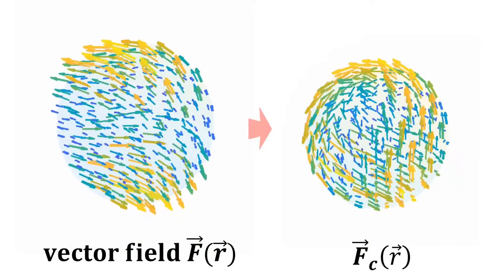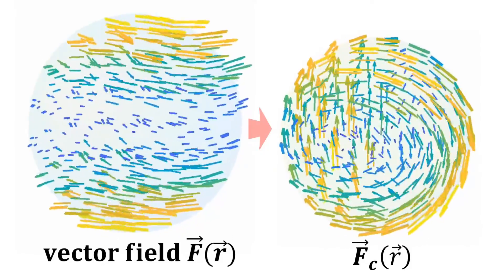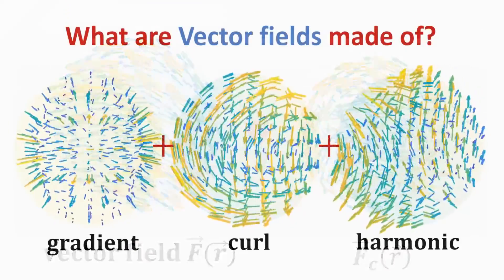We show here the extracted curl field F_C. Notice how the vector fields are rotational as one would expect.